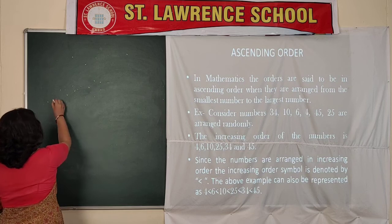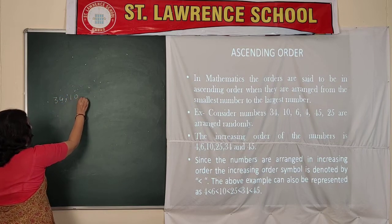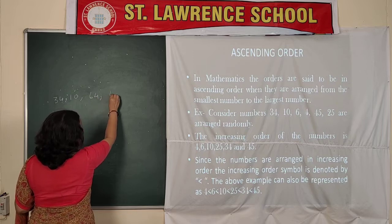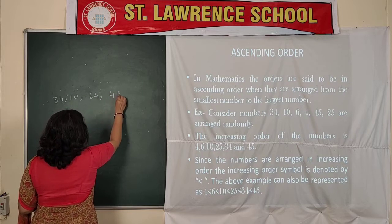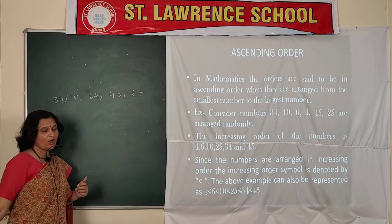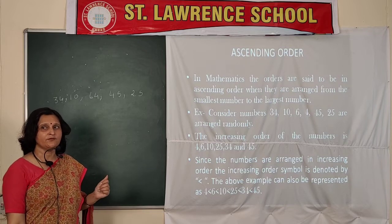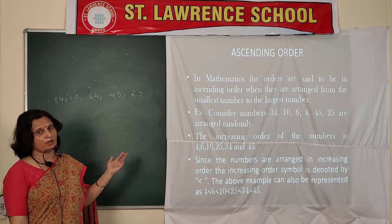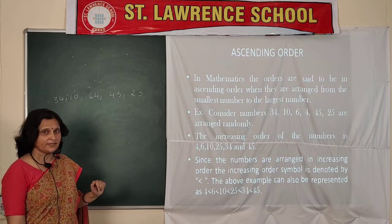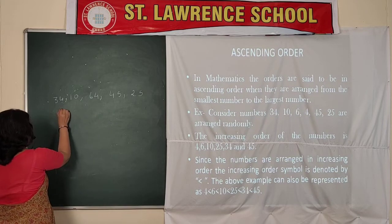So the numbers given are 34, 10, 64, 45, and 25. How will we arrange these numbers? First we have to write the smallest number. So which is the smallest number from the given numbers? The smallest number is 10.